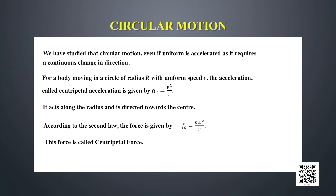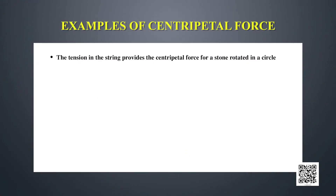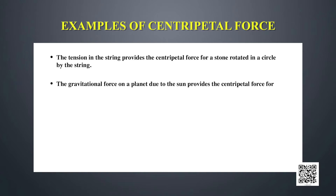The centripetal force is always essential to overcome the inertia of direction in a body. For example, the tension in the string provides the centripetal force for a stone rotated in a circle — the tension pulls the stone towards the center of the circular path. The gravitational force on a planet due to the sun provides the centripetal force for the circular motion of a planet around the sun.